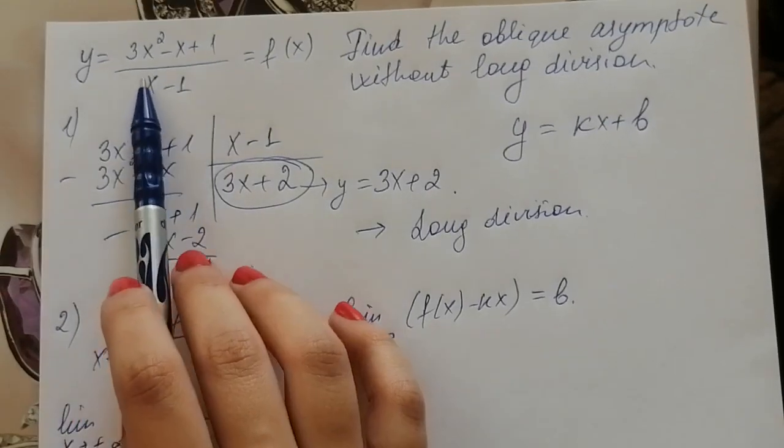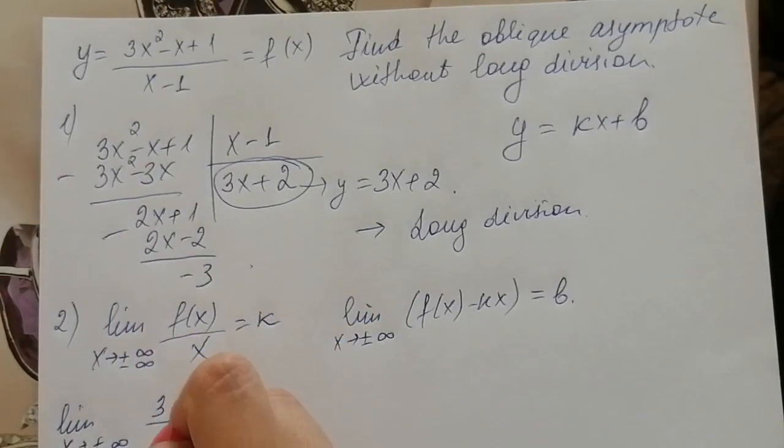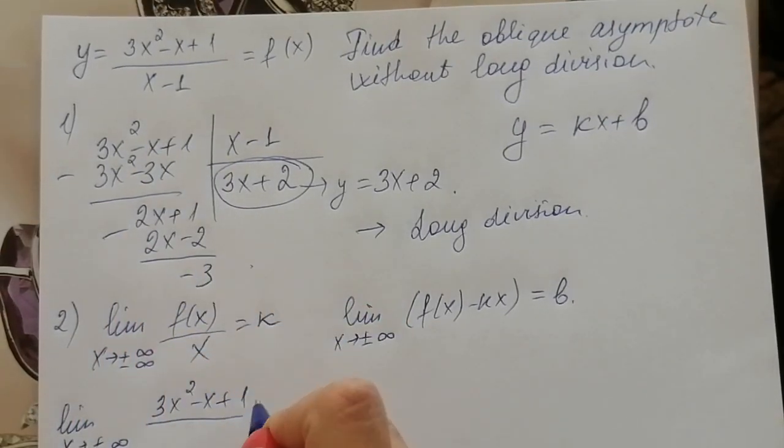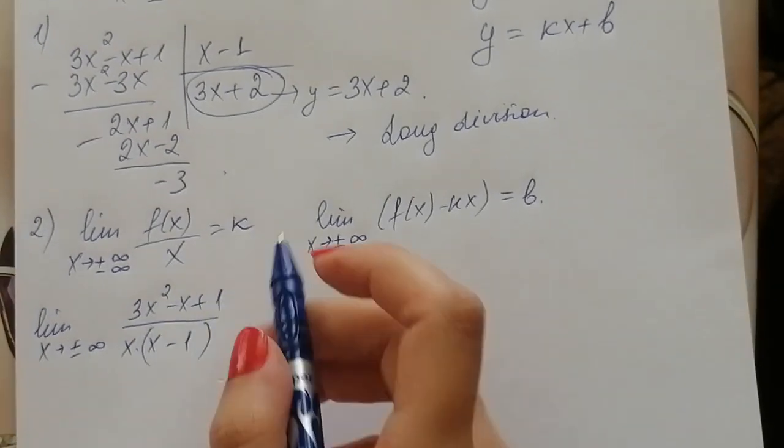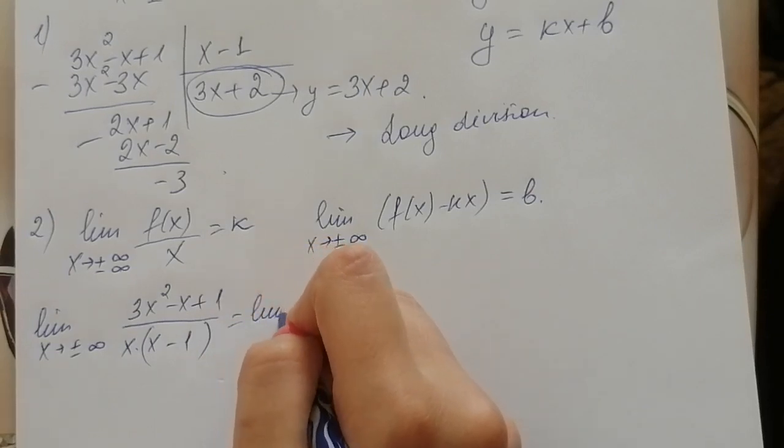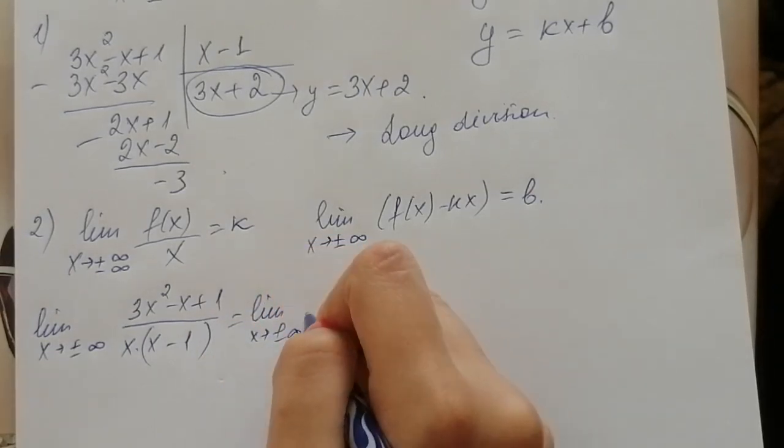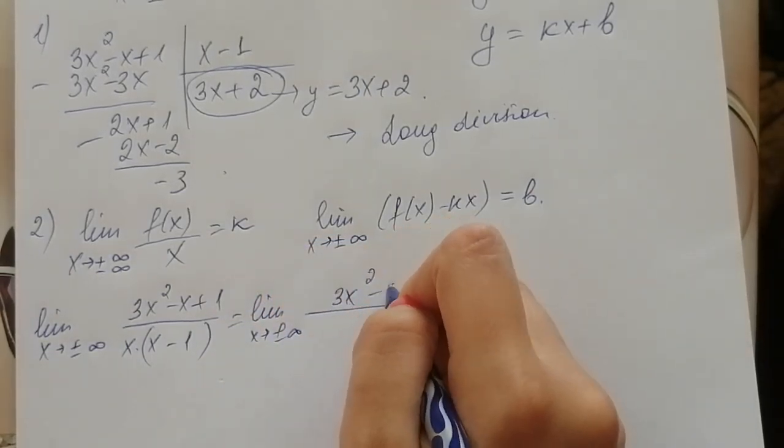In our task f(x) is equal to 3x squared minus x plus 1 over x minus 1, times x. And it's equal to 3x squared minus x.